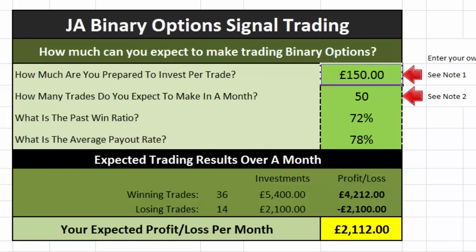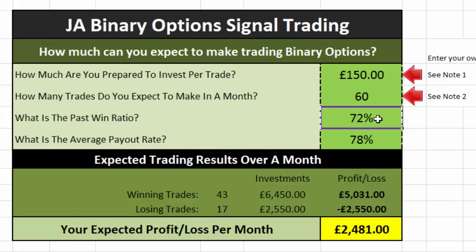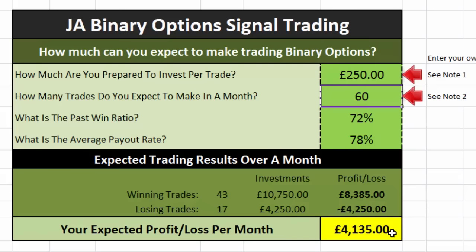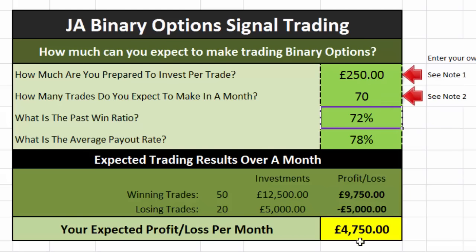So that gives you a feel for it — that's how you use the spreadsheet. You can download the spreadsheet and play with some of your own figures, just these first two boxes really. Get inspired, realise the maths works for you. If you're going to do 60 trades a month, you'd have 43 winning trades — 72% winners and 17 losing trades — and you'd make £2,500 on £150 investments. If you've got £250 investments, you could be looking at £4,000 a month. I don't think realistically you'd get more than 60 trades a month, though you might if you're really dedicated.